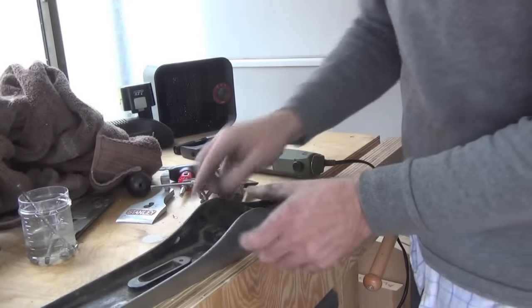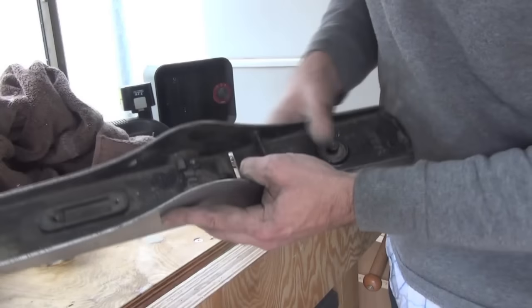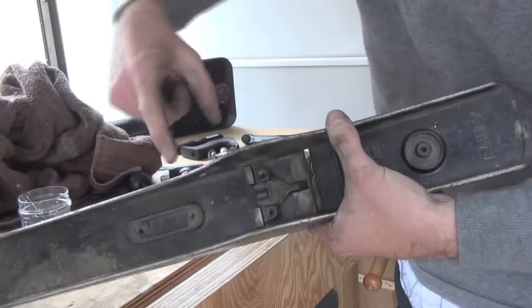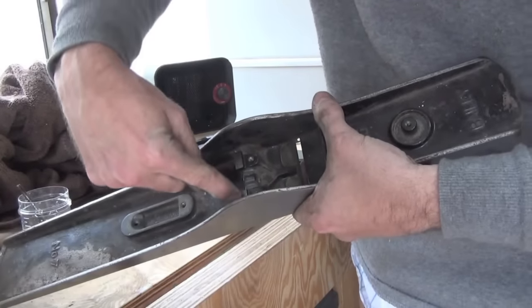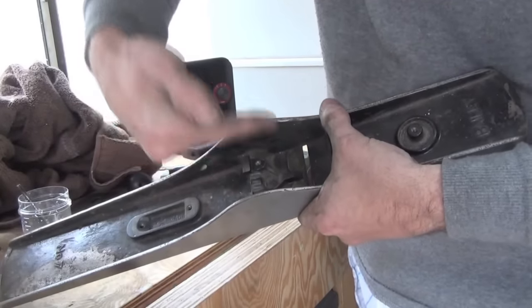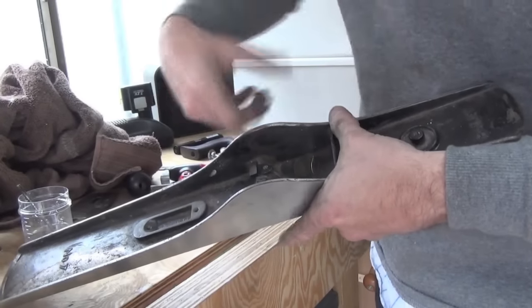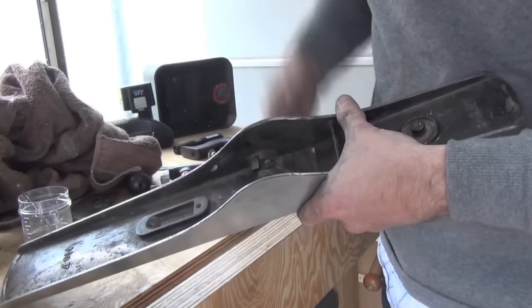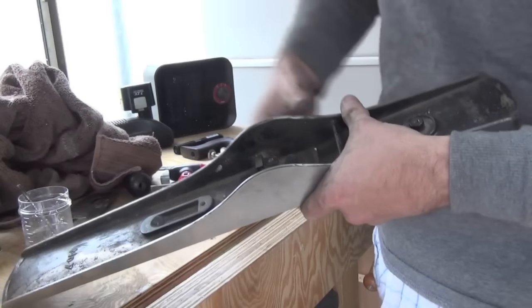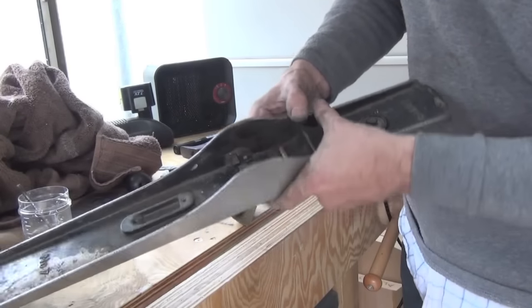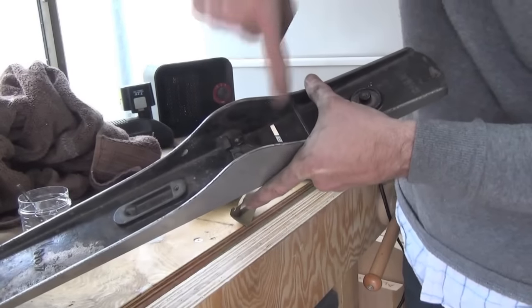There are a few places where you can't just sand. For example here. If you sand here and round off these edges, you'll lose the tightness of the fit of the frog, and that will mean the plane will transfer power less efficiently. The blade will rock and you'll have all sorts of problems. Same here with this edge.